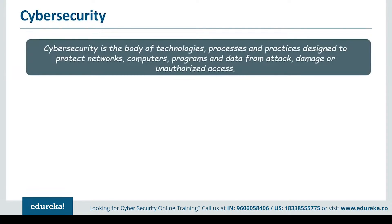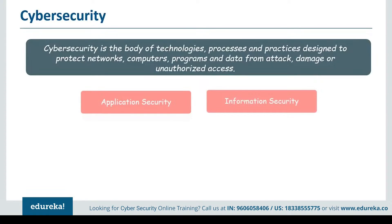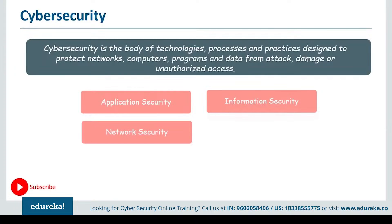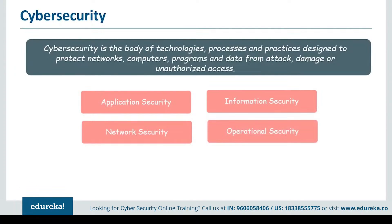When we say data, we mean digital data that is stored, transmitted, and used on an information system. The network, servers, computers, and other online gadgets are just mechanisms to get to this data. Ensuring cyber security requires coordination throughout an information system, including: application security — keeping software and devices free from threats; information security — protecting the integrity and privacy of data; network security — securing a computer network from intruders; and operational security — all processes for handling and protecting data assets, including user permissions and procedures for how data is stored and shared.